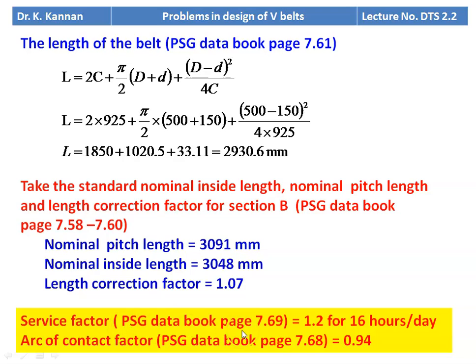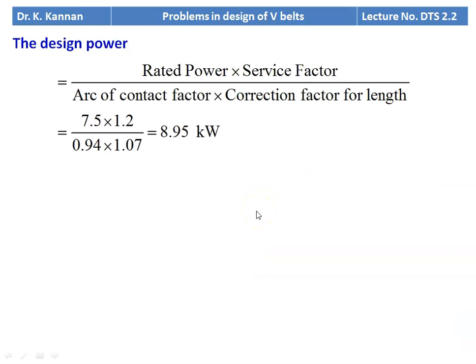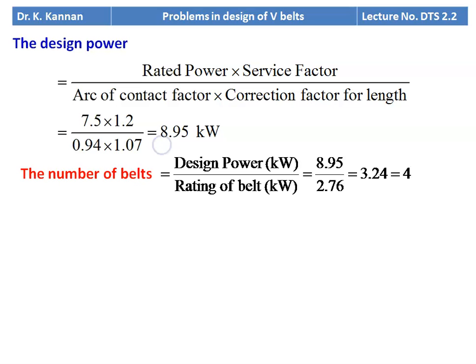Service factor = 1.2 for 16 hours per day (assumed). Arc of contact factor from page 7.68 = 0.94 for 157.3 degrees. Design power = 7.5 × 1.2 / (0.94 × 1.07) = 8.95 kW. Number of belts = 8.95 / 2.76 = 3.24, rounded up to 4 belts required.